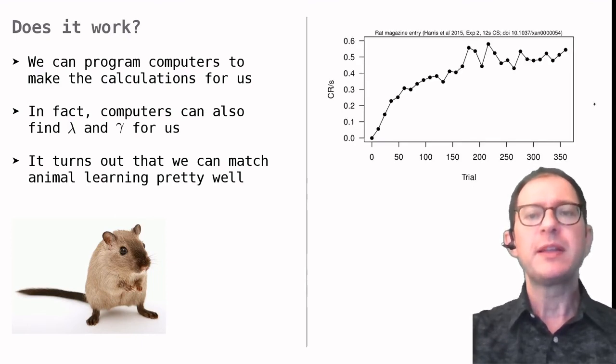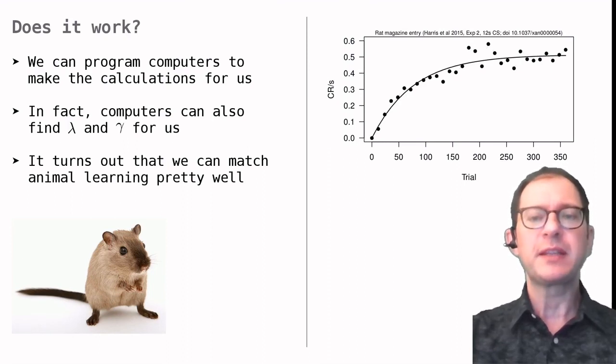Here is just one example. This is the same graph we saw at the beginning of the lesson, the graph that I used as an example of the kind of results we would like to explain with the learning model. And this is the best fit of the Rescorla-Wagner model to the data points. It matches the actual behavior pretty well, as you can see.